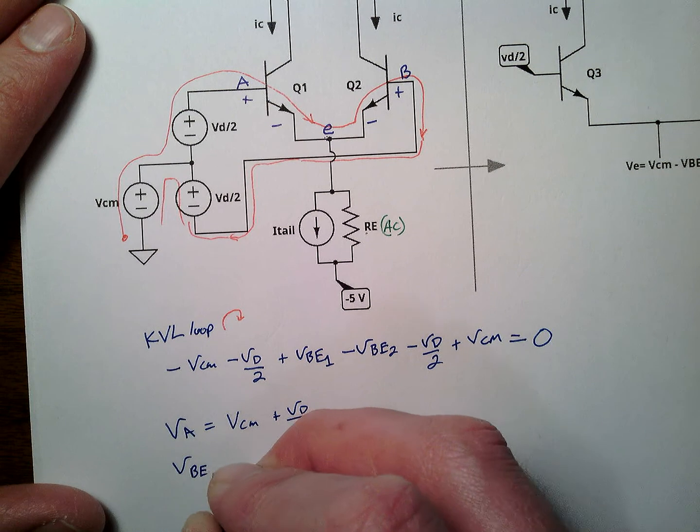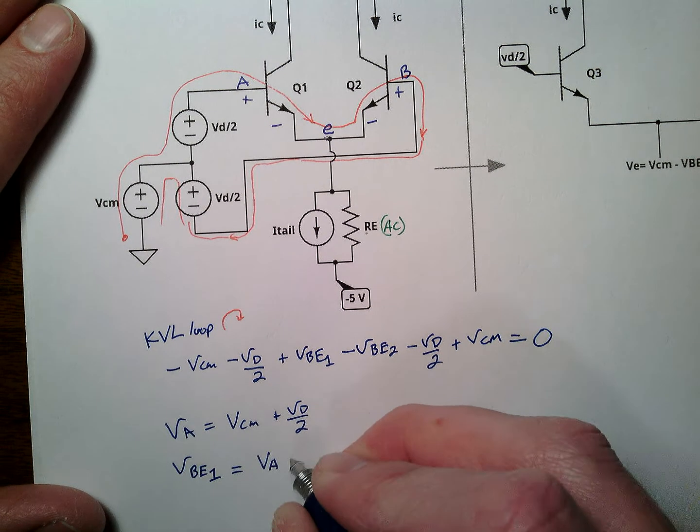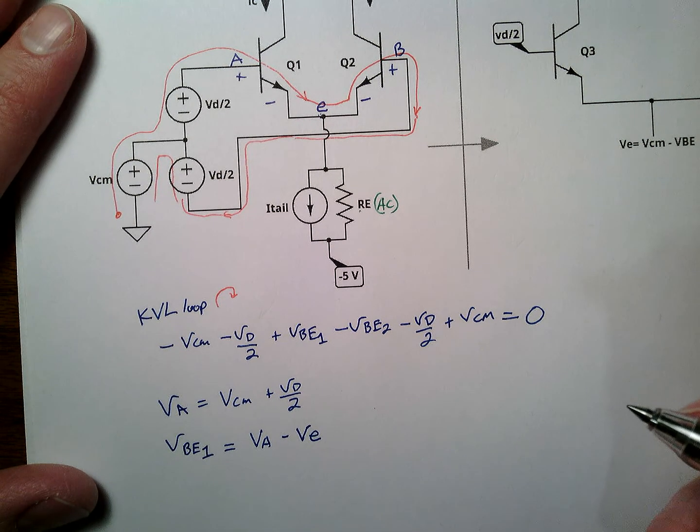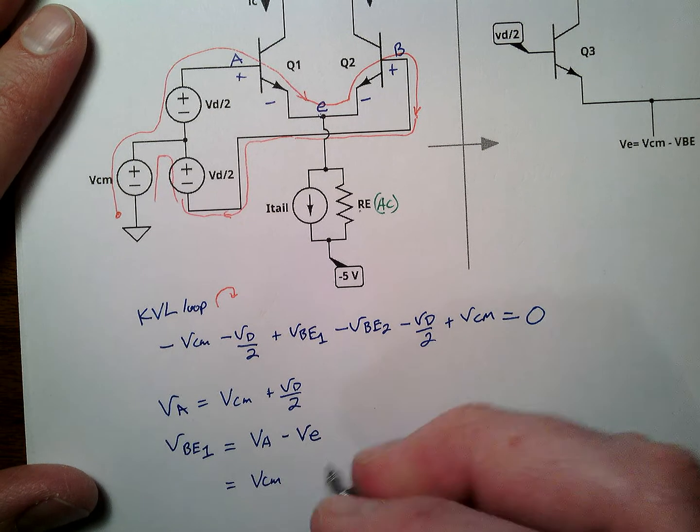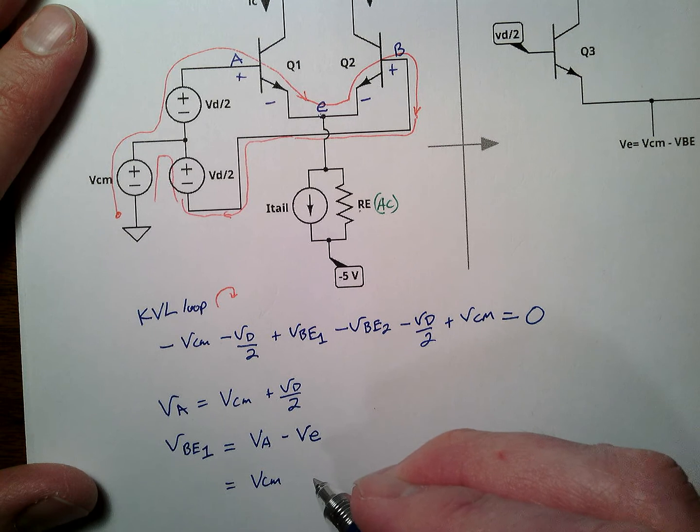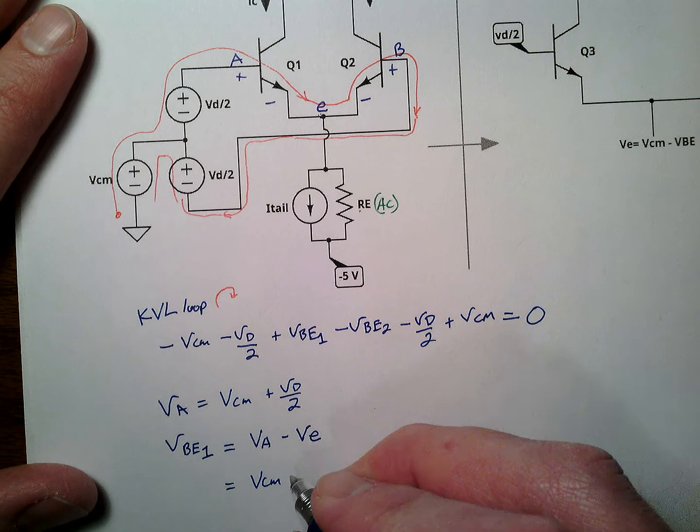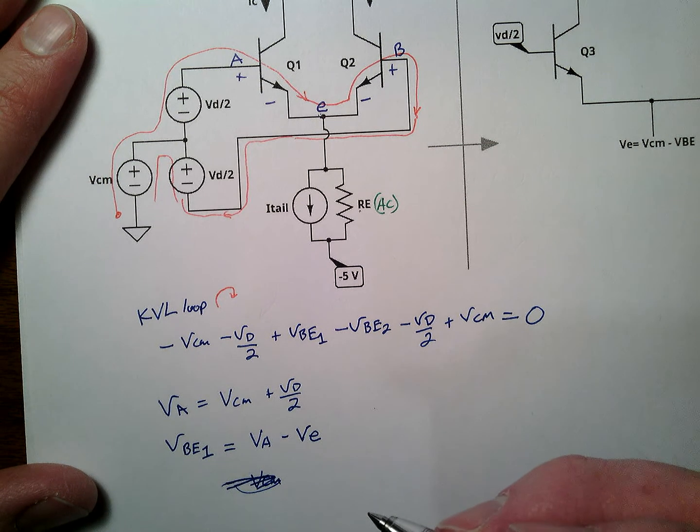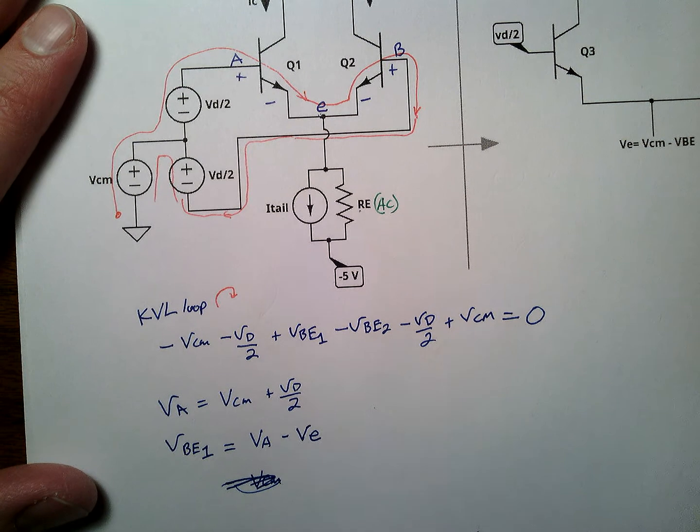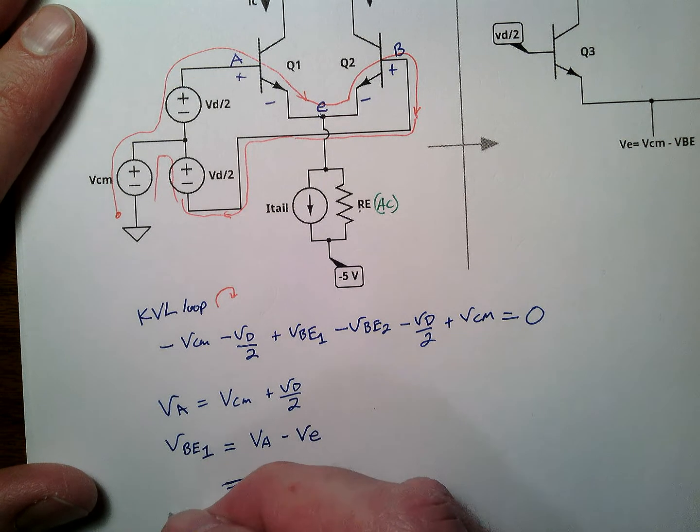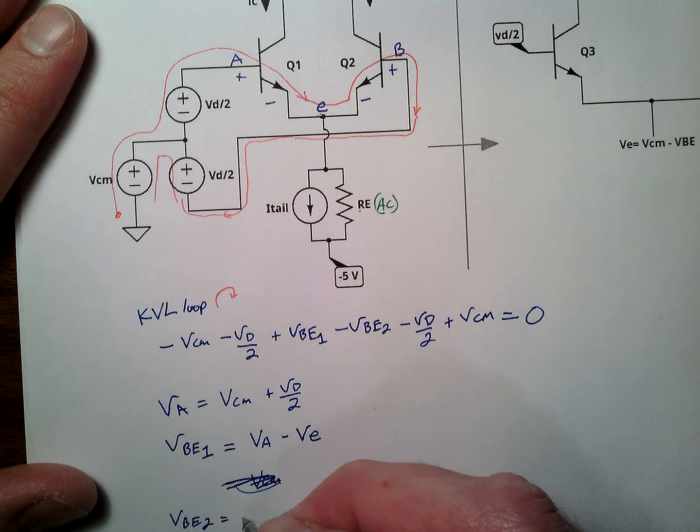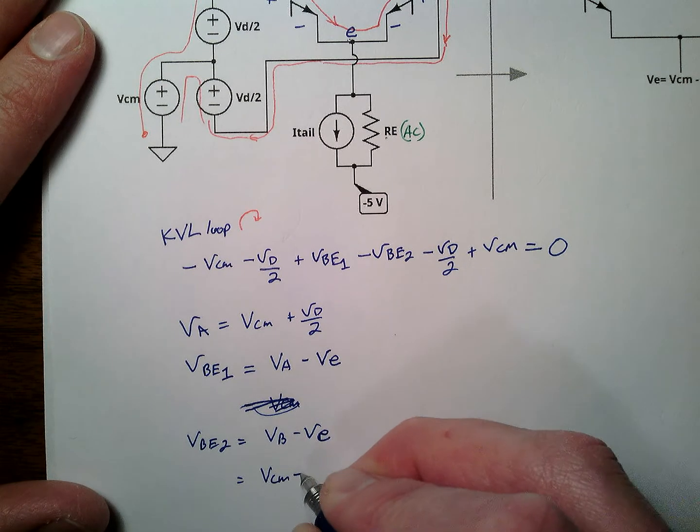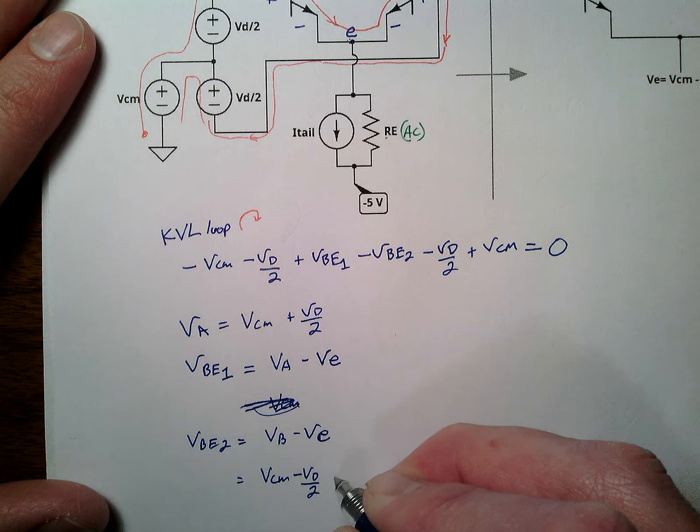Well, VBE number 1 is in fact VA minus VE. Substitute this in, we get VCM. Okay, VBE1, okay, so we have this, this, this, we have VBE2 is VB minus VE. Remember this is VCM minus VD over 2, minus VE.